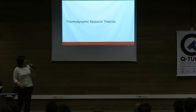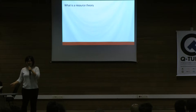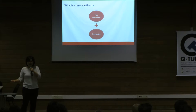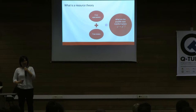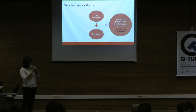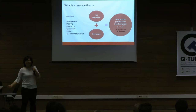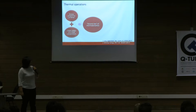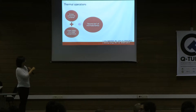Next I want to talk about resource theories. A resource theory is identified by several elements: you have operations that are cheap and therefore allowed for free, you have free states that you can generate easily, and then the question is whether, given these rules, you can achieve a particular transformation. To answer this, we derive quantifiers or monotones — functions that are monotonic in the direction of the state transition. The basic paradigm of resource theoretic quantum thermodynamics is called thermal operations, where the free operations allowed are global energy-preserving unitaries across all your systems, and the free states are any Gibbs states at a fixed temperature.